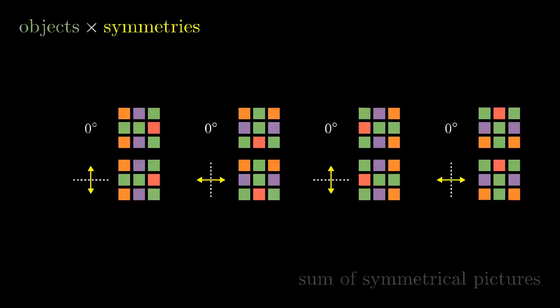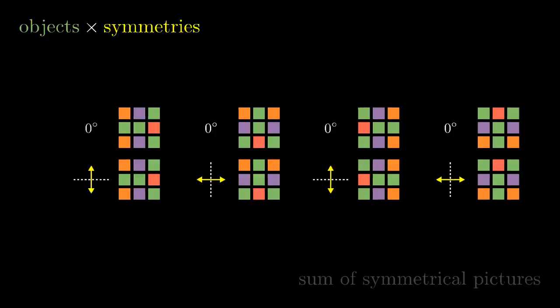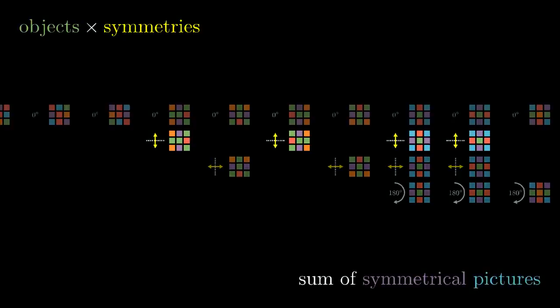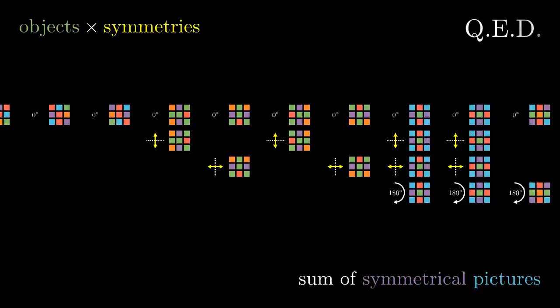By the way, it is also true that for a single object every column has the same size but this fact is not really important for the proof. We do this for every object, so in the end we obtain all the possible pictures, each picture labeled by all of its symmetries. Finally, instead of counting it by the pictures, we count it by the symmetries, so we get the sum of the numbers of the symmetrical pictures. Therefore, the number of objects times the number of symmetries is the sum of the numbers of symmetrical pictures.